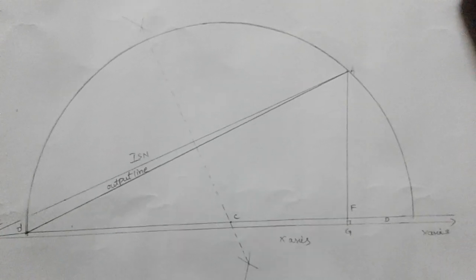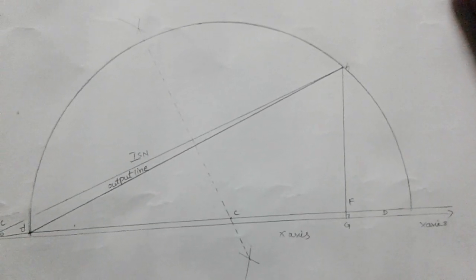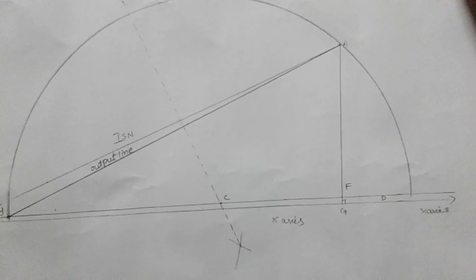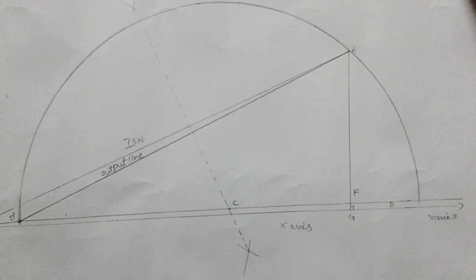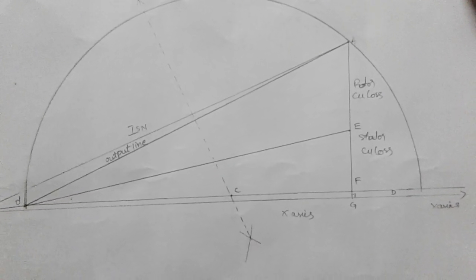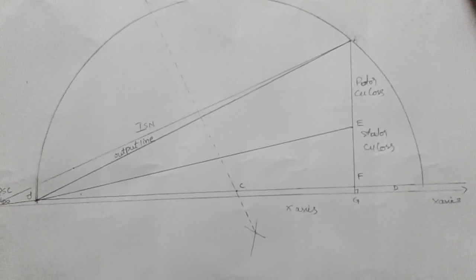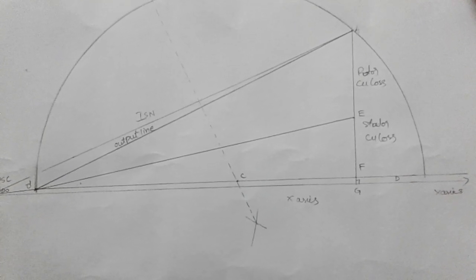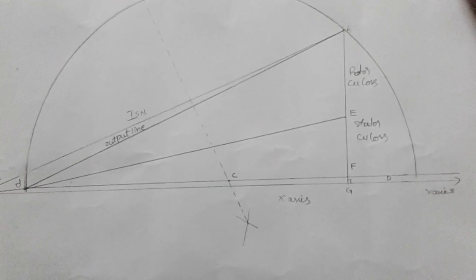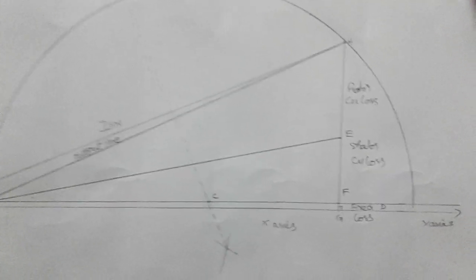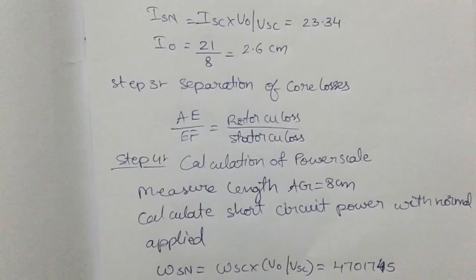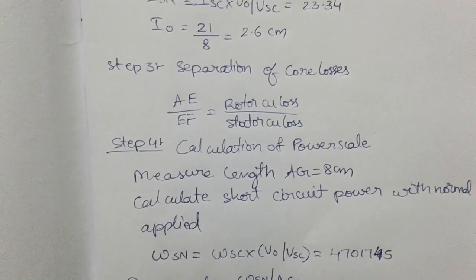Point D is the intersection of the X-axis and the parallel line, indicating fixed losses. To calculate the stator copper loss, measure the AG distance, find its midpoint, and join that midpoint to O'. After calculating AF and dividing it in half, mark the midpoint as E and join it to O'. The upper part AE indicates the rotor copper loss, and EF indicates the stator copper loss. The segment FG indicates the fixed losses.